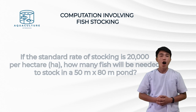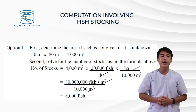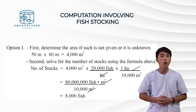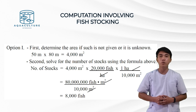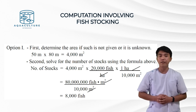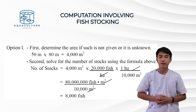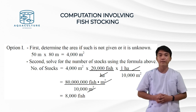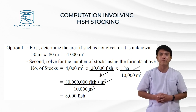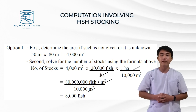For the solution, Option 1: first determine the area. 50 meters by 80 meters equals 4,000 square meters. Second, solve for the number of stocks using the formula: number of stocks equals 4,000 m² times 20,000 fish per hectare times 1 hectare over 10,000 m². The answer is 8,000 fish.